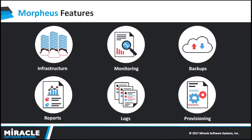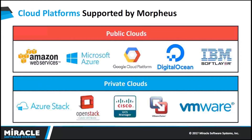Let us move on to the next slide: what types of clouds are supported by Morpheus. Clouds are differentiated into two types — public cloud and private cloud. Sometimes we need to use a combination of both, known as a hybrid cloud, which is used mostly for security purposes. If an organization wants to maintain multiple clouds at the same time, it really needs a lot of people to track issues. These challenges can be overcome by using Morpheus, one of the cloud management tools.